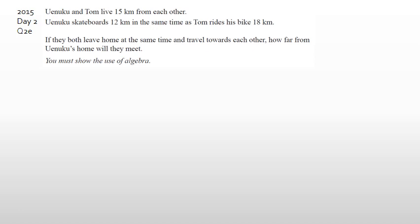Mr. Yu and Tom live 15 kilometers from each other. So if Mr. Yu's house is at zero, Tom's house is 15 kilometers away. The distance from here to here is 15 kilometers.